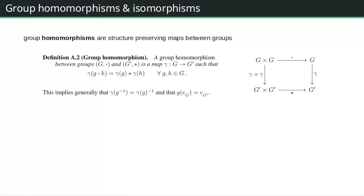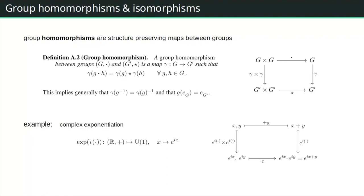An example is complex exponentiation mapping the one-dimensional translation group to U(1): x ↦ e^(ix). This is a group homomorphism because e^(i(x+y)) = e^(ix) · e^(iy), so the diagram commutes. This map wraps the real line around the unit circle and is periodic with period 2π.